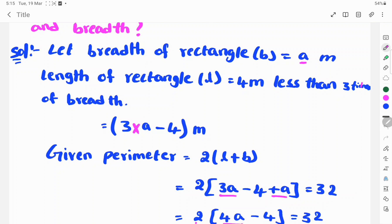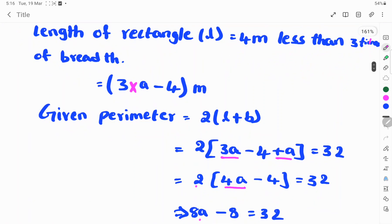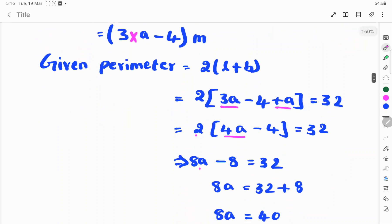So, 2 into 3A. 3A plus A is 4A minus 4 equals 32. 2 into 4A is 8A minus 8 equals 32.